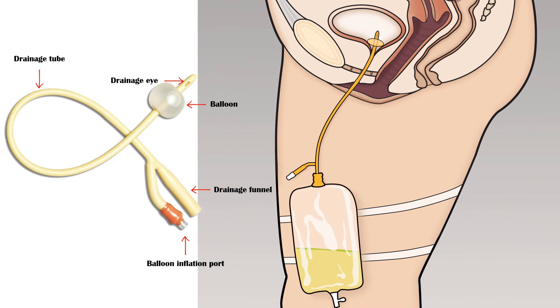This image shows a catheter inserted into a female bladder through the urethra. The inflated balloon prevents displacement of the catheter end, and a urine bag is connected to the drainage funnel to collect urine.